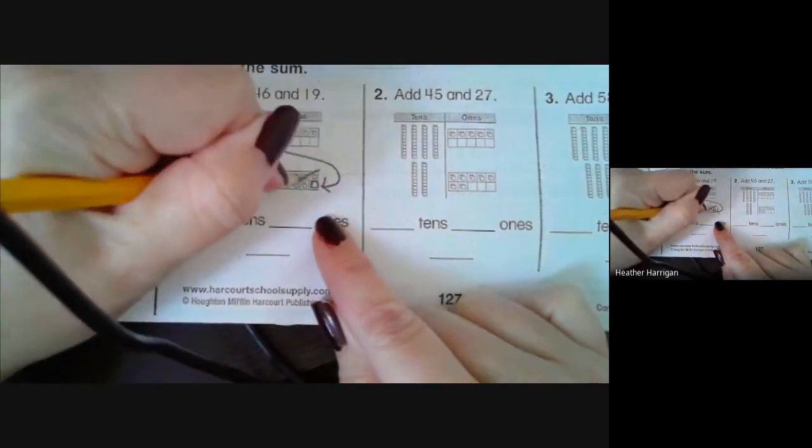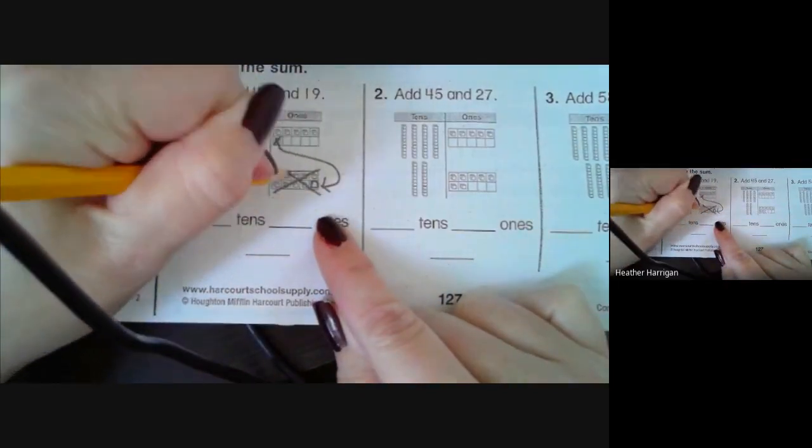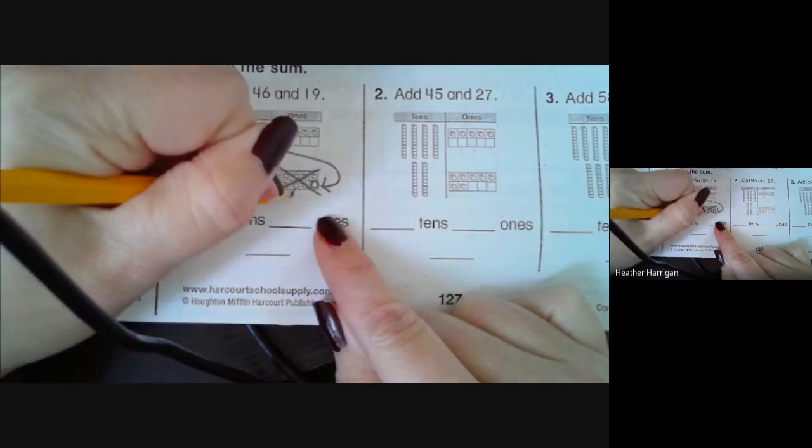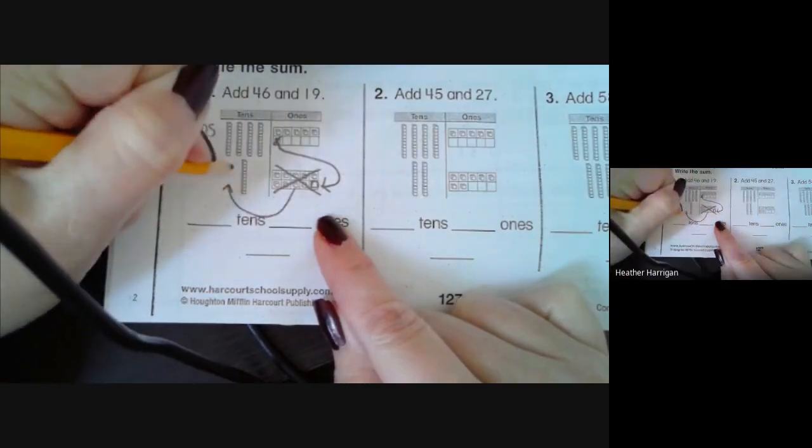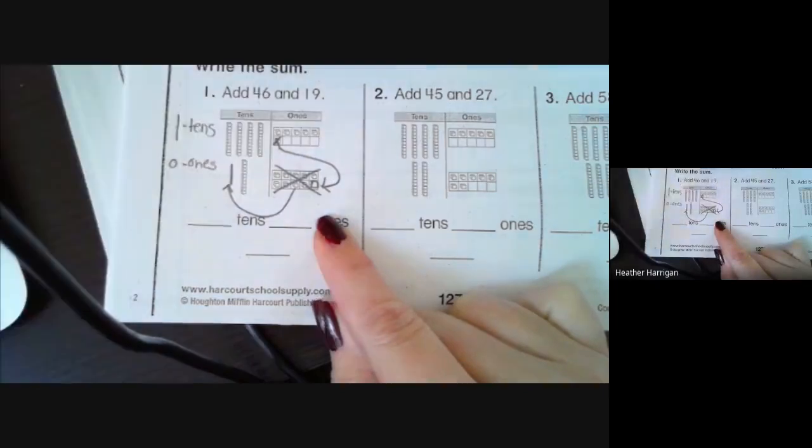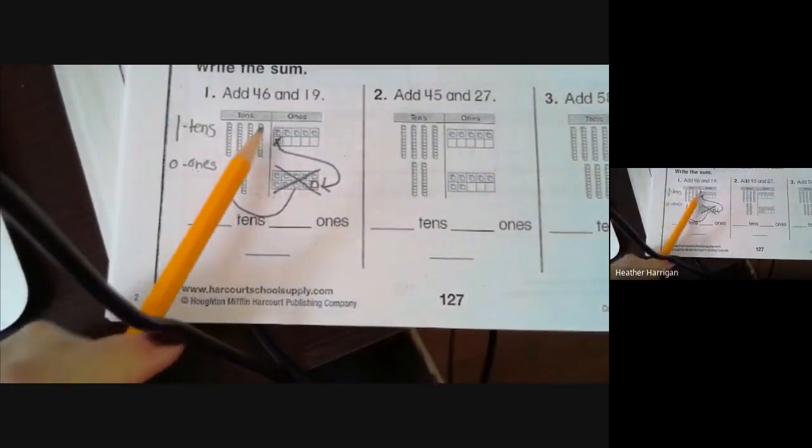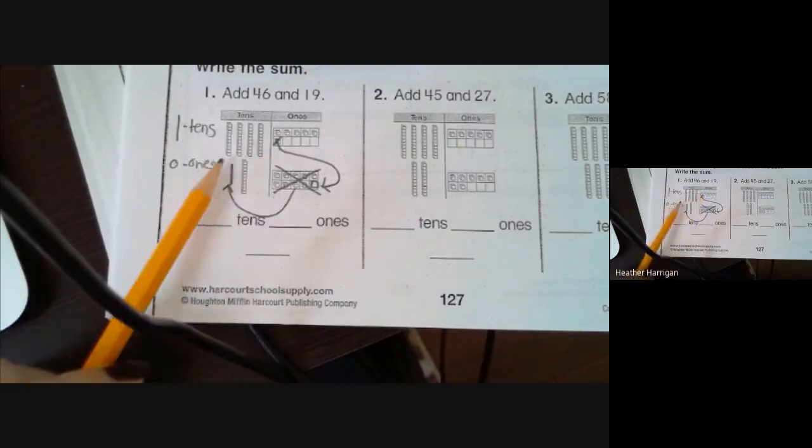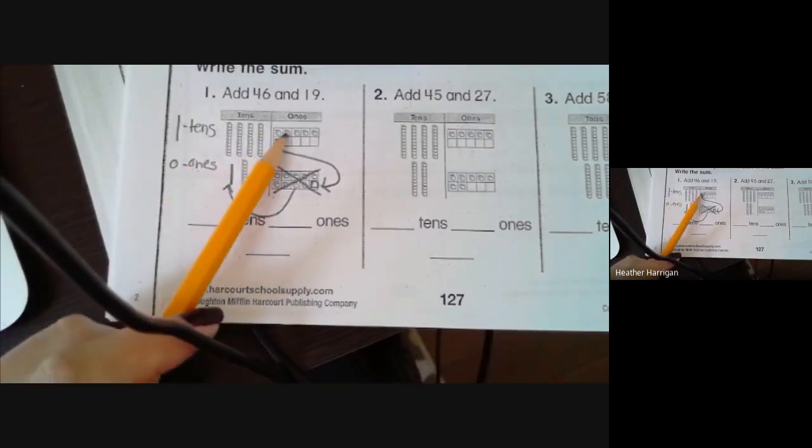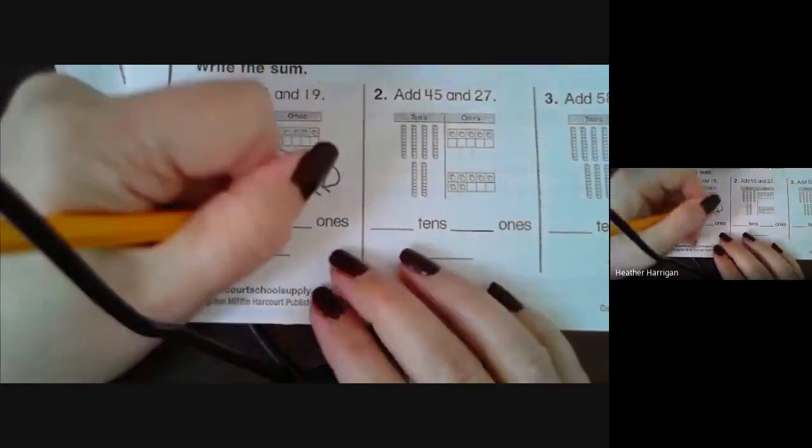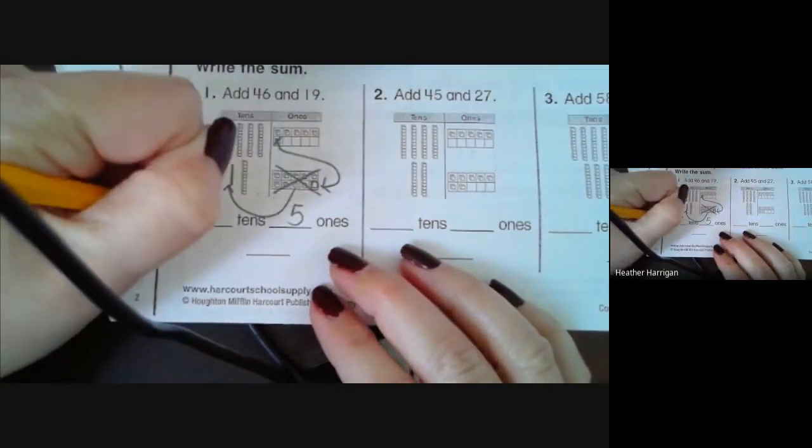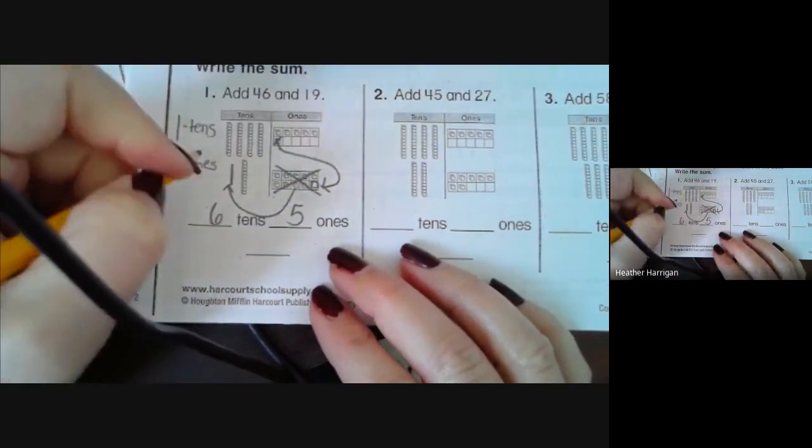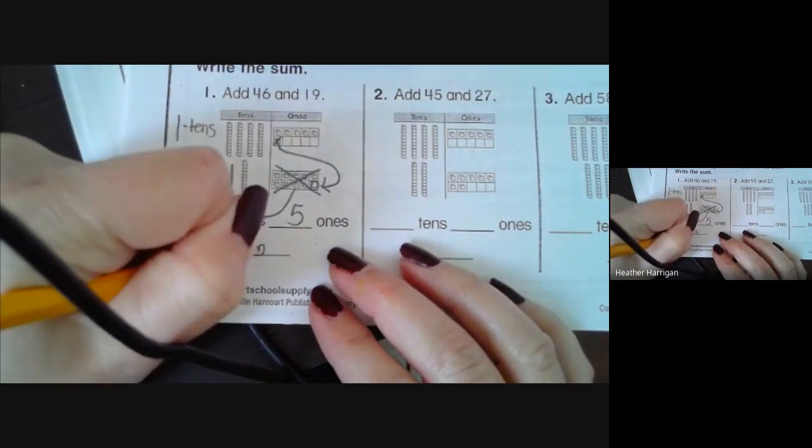Then I have them cross the ten frame out and regroup this as a new ten. Once they do that, they can count up how many ones are left and how many tens there are. So there are five ones and six tens, and then we would get six tens and five ones, which would give us 65.